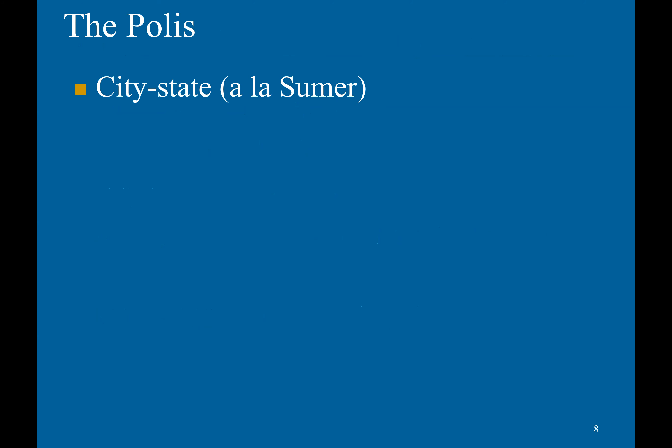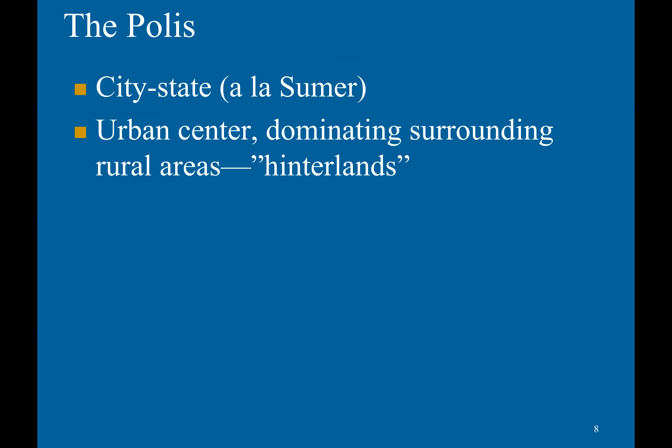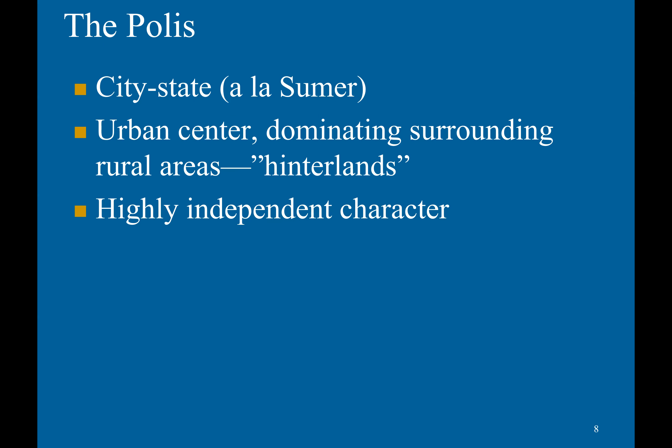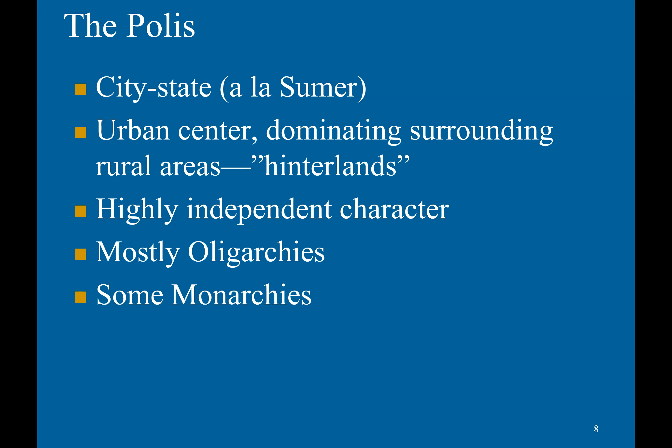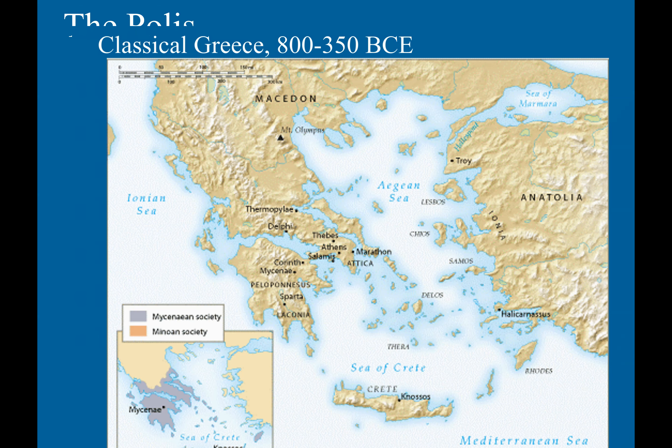Then you get the rise of the poleis, or city-states, after the Dark Ages — just like the Sumerian city-states. They were urban centers dominating surrounding rural areas, known as hinterlands. They were highly independent from each other. Most were oligarchies, a few were monarchies, and some were early democracies.